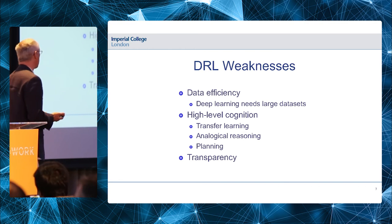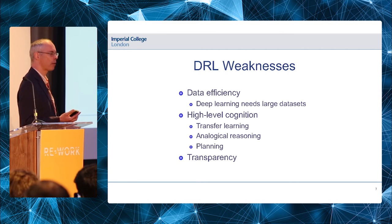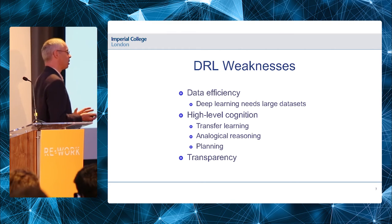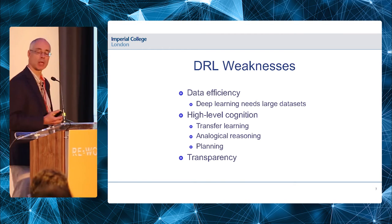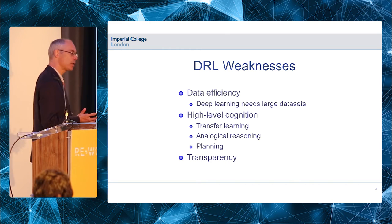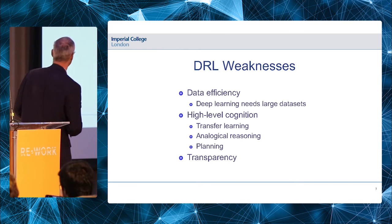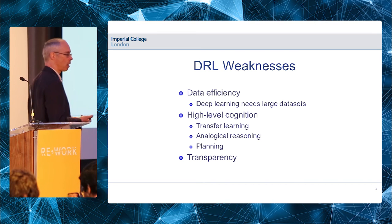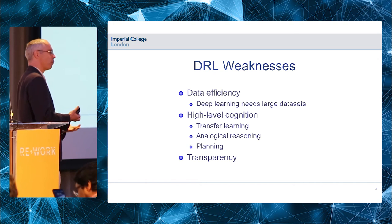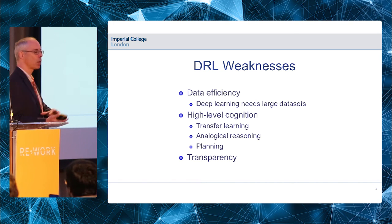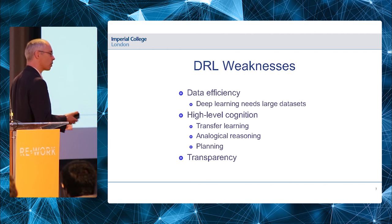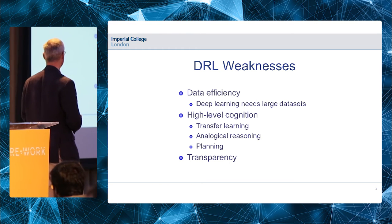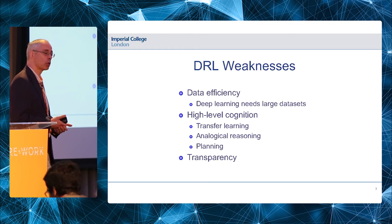There's also no high-level cognition in today's generation of deep RL systems. I'm lumping together several things I think of as closely related to high-level cognition. Transfer learning is certainly one: being able to employ expertise acquired in one domain and apply it to another — even just a small variation of the same game — is a challenge for the current generation.